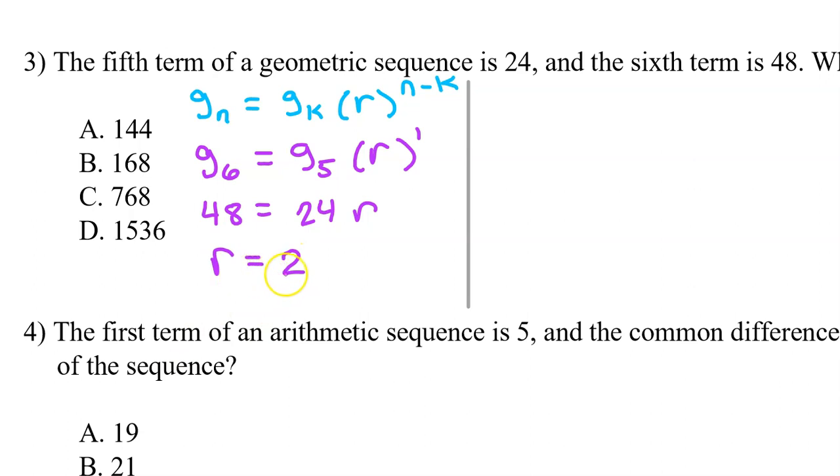Now that we know that the common ratio is 2, we can write a rule for the nth term of the geometric sequence. g_n will equal, and I'm still going to use g_5 right here for a moment, but instead of r, I will now put 2. And instead of n minus k, I will now put n minus 5, so to the n minus 5 power.